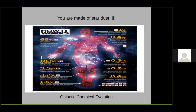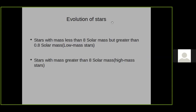It is confirmed that we are made of star dust — our body comes from stars. I define low mass stars as stars with mass between 0.8 to 8 times the mass of the Sun, and stars above 8 solar masses are defined as high mass stars.